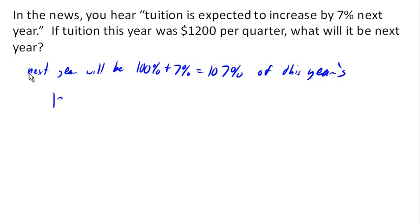So in other words, our tuition this year was $1,200, let's find 107% of that $1,200. And of course, usually we don't actually multiply by the percent. We go ahead and rewrite it as a decimal. We go ahead and multiply. We come up with next year's tuition will be $1,284 per quarter.